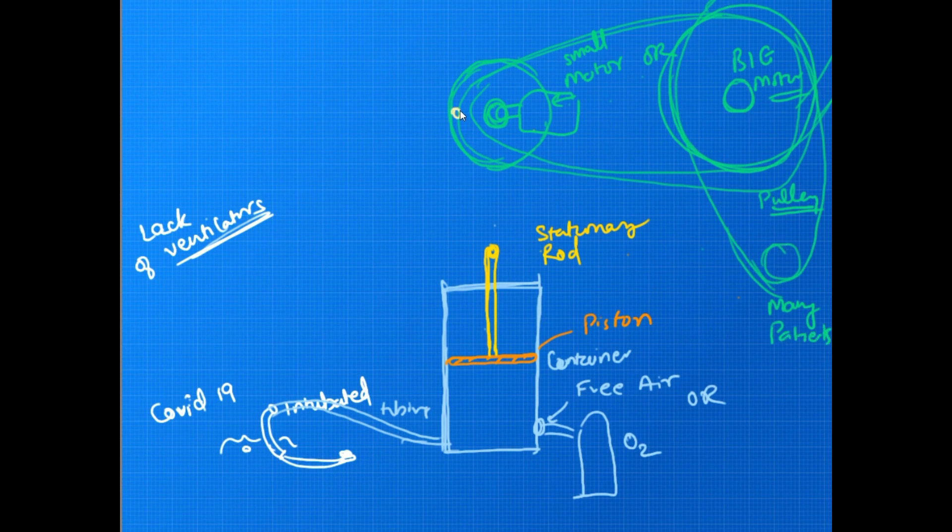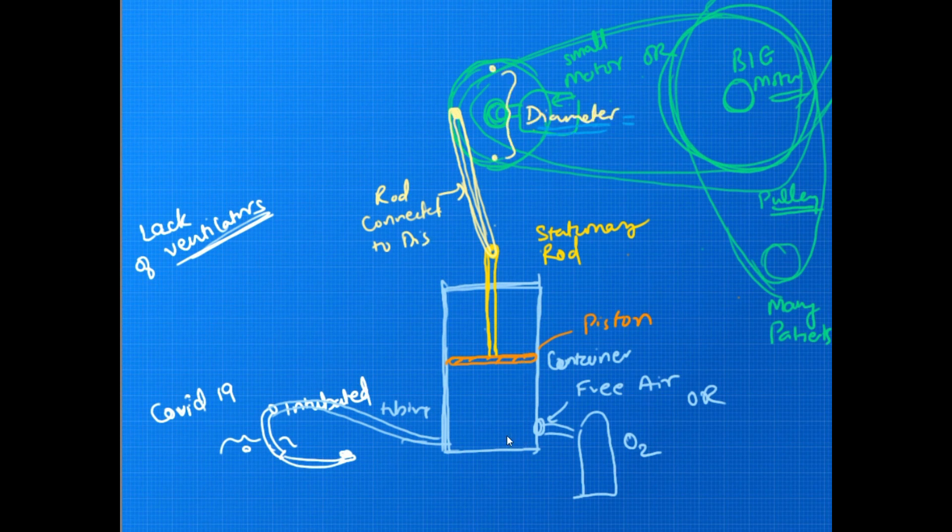This stationary rod will be connected by a moving rod to this moving disc, and so when this disc will move, the rod will move and the stationary rod will move in turn.